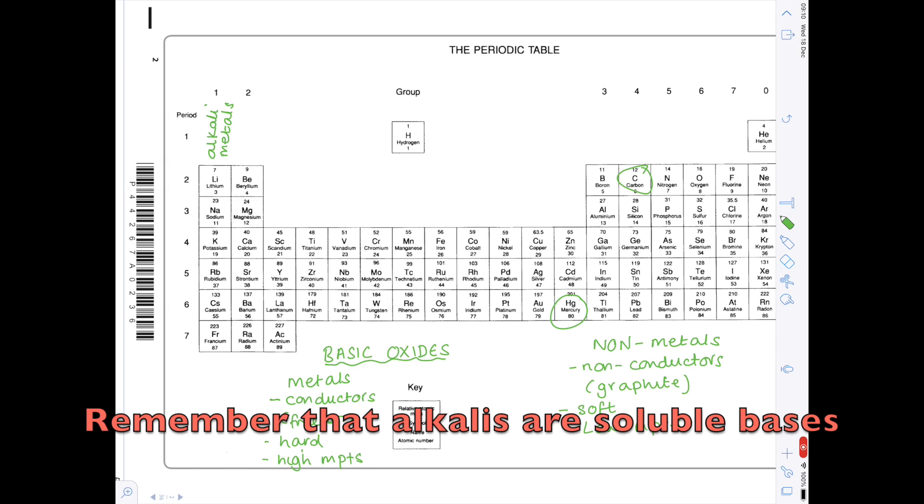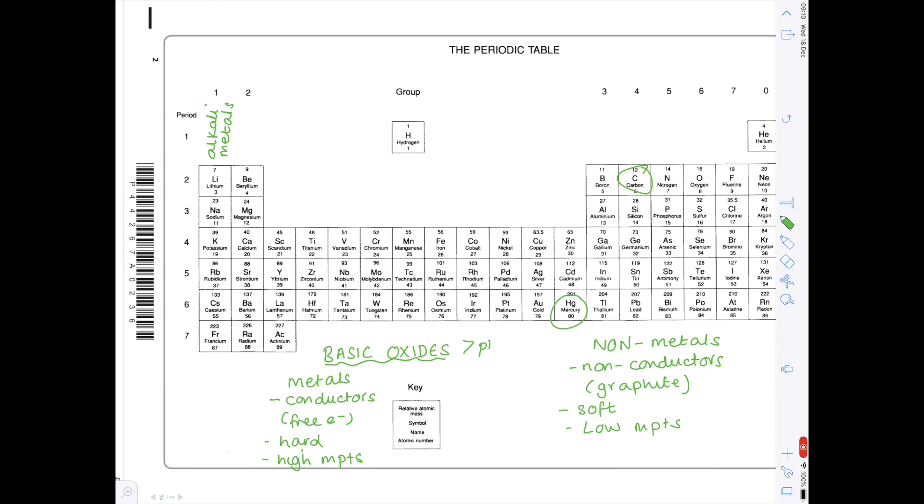They're effectively pHs above 7 and therefore by definition because we tend to know that the opposite is true for the non-metals we can say that they form acidic oxides and remember your example is always asking about this sort of thing. So try and use the fact that group 1 metals are known as alkaline metals to help you with that.